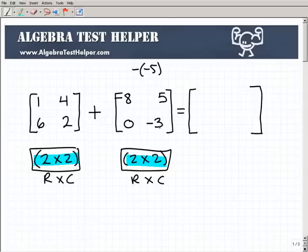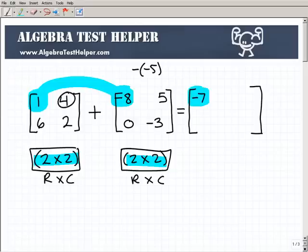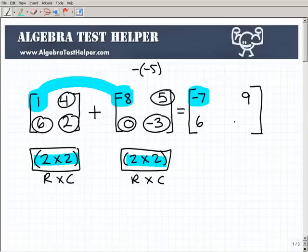So now we have a new problem. It's an addition problem. So we turned the subtraction problem into an addition problem, and we could just do the same thing as we did in our previous problem and add up the respective elements. So 1 plus negative 8 would be negative 7. 4 and 5 would be 9. 6 and 0 is 6. And 2 and negative 3 would be negative 1. Pretty straightforward.